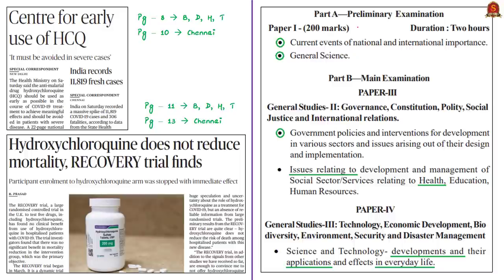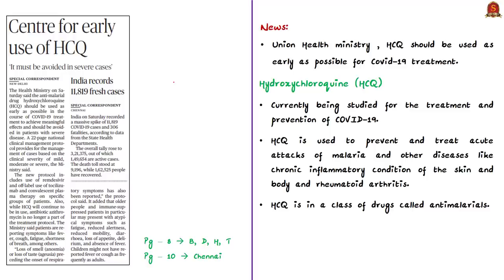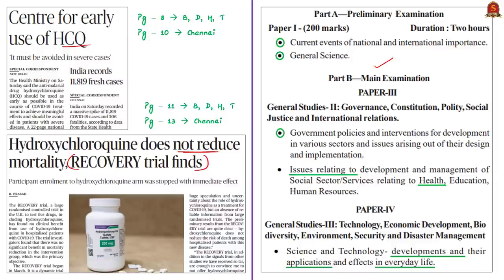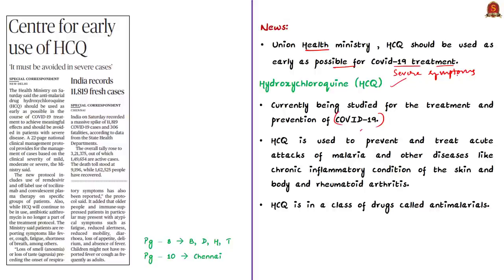The next news article says recovery trial finds hydroxychloroquine does not reduce mortality. In this context, we should know about hydroxychloroquine, its various uses, and the associated issues. Hydroxychloroquine is an anti-malarial drug which is believed to have some meaningful effect or benefit in the treatment of COVID-19 patients. The Union Health Ministry has said that hydroxychloroquine should be used as early as possible for the treatment of COVID-19 patients, except for patients with severe symptoms.